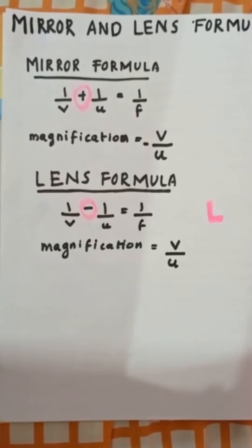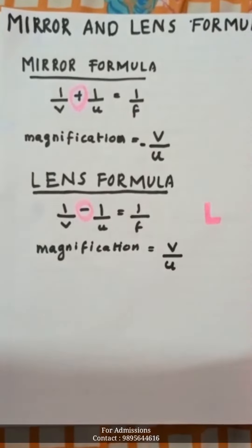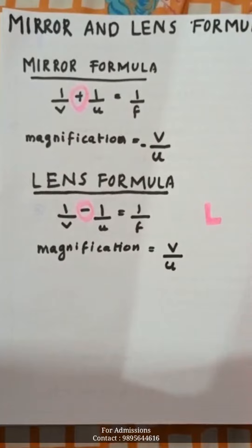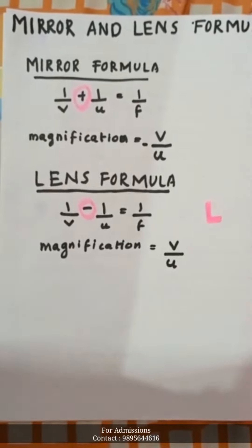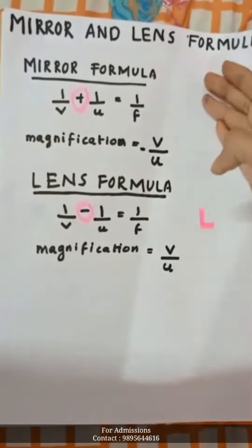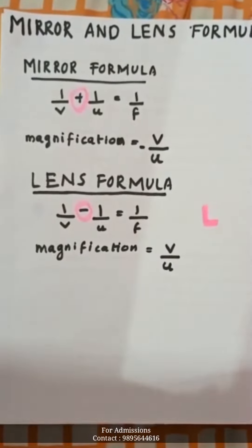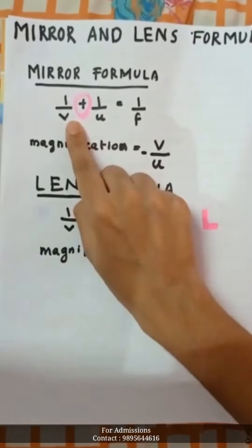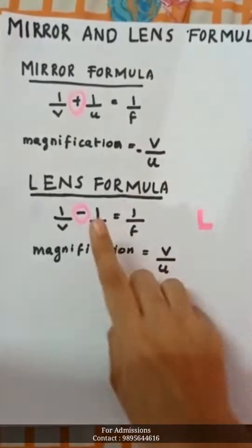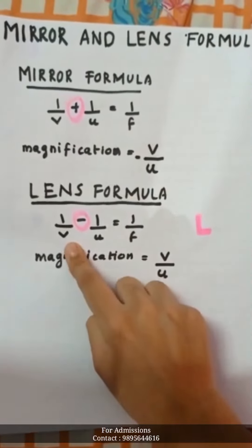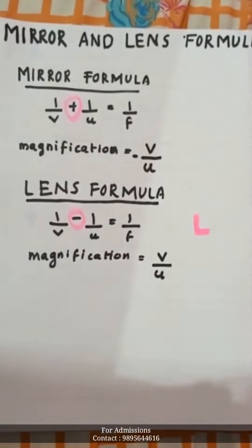If we are interested in resolving confusion, we will try to find a trick or a tip. The mirror formula and lens formula both involve 1/v. The mirror formula is 1/v + 1/u = 1/f, while the lens formula is 1/v - 1/u = 1/f. This is where the confusion arises.